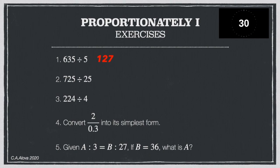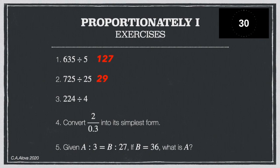Exercise 2: 725 divided by 25. Double both twice — multiply by 4. 25 becomes 100, and 725 times 4 is 2900. Cancel the two zeros: 29. Exercise 3: Apply halving. Halve the numbers repeatedly until we reach simple values. Halving gives us 112 divided by 2, and halving again gives 56. The answer is 56.